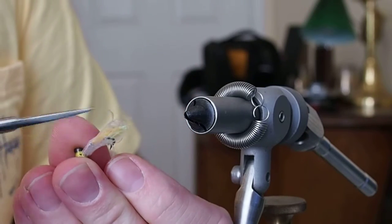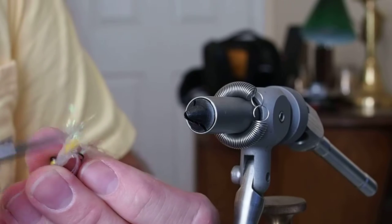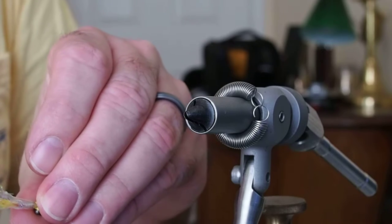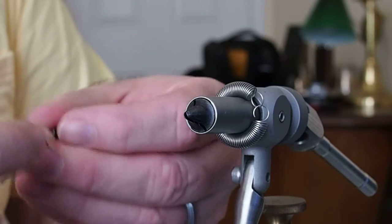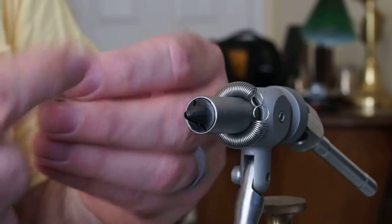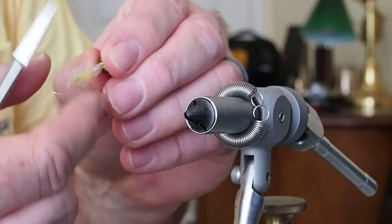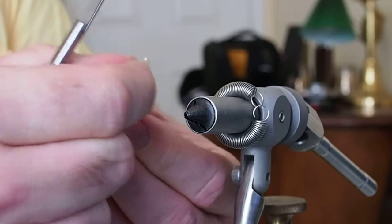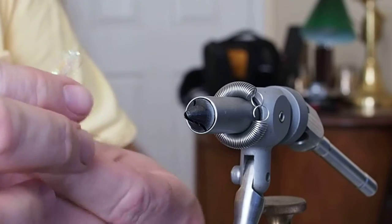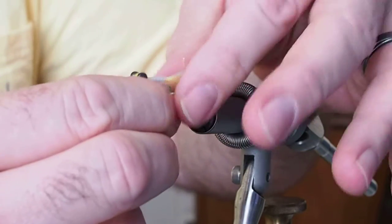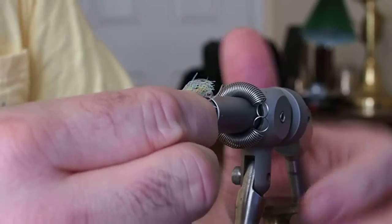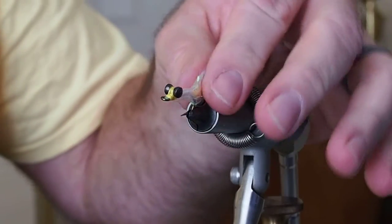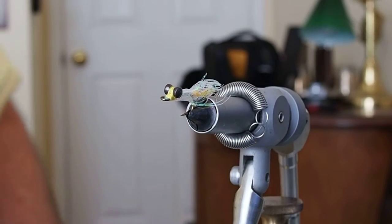I'm just going to go ahead and fray out the tail. So you end up with a body that's wrapped around the tail, extending that flash. Something like that. And that's the Cliffy shad fly.